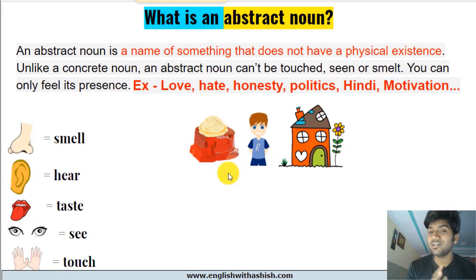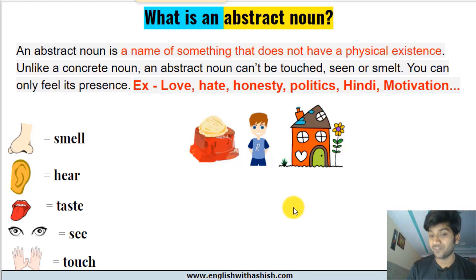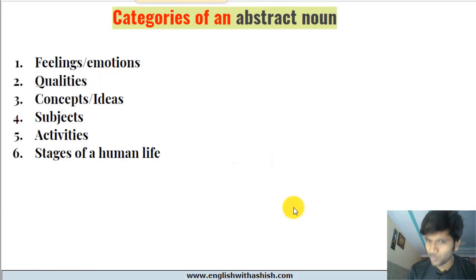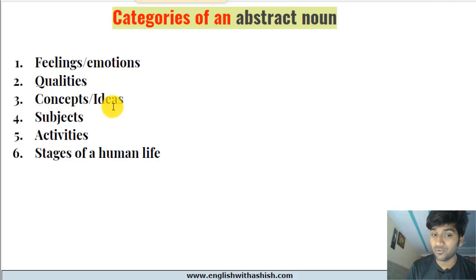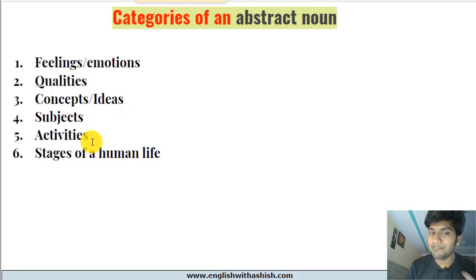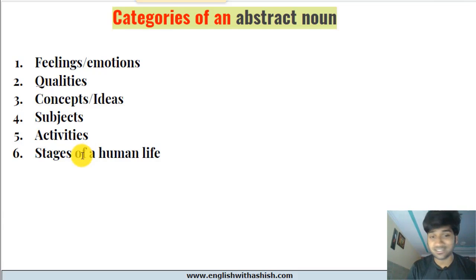Now the important thing to understand is where do abstract nouns come from — what categories do they come from? Number one: feelings and emotions. Number two: qualities. Number three: concepts and ideas. Number four: subjects. Number five: activities. Number six: stages of a human life. Let's understand them one by one.